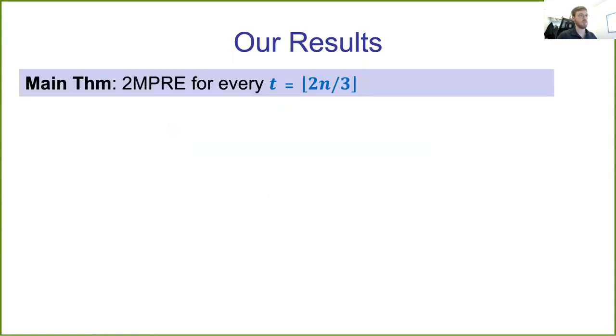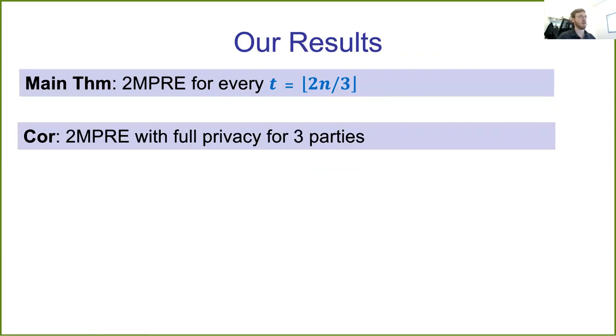As it turns out, the answer is positive. In our main theorem, we have constructed a 2MPRE with a privacy threshold of two-thirds. As an immediate corollary, we receive a 2MPRE that is fully private in three-party settings, since two-thirds of three parties gives us full privacy.